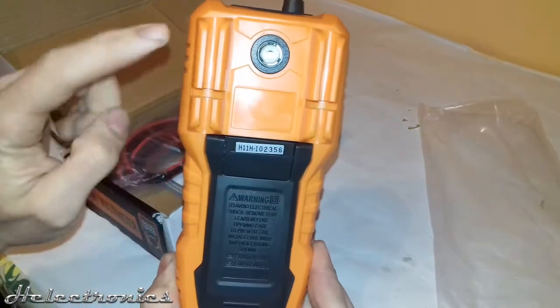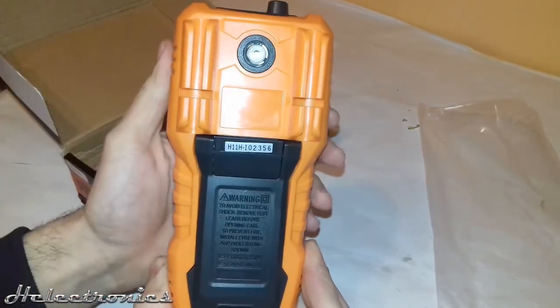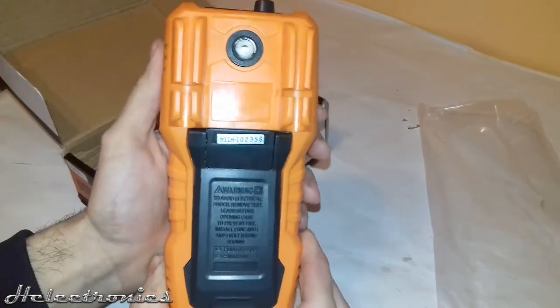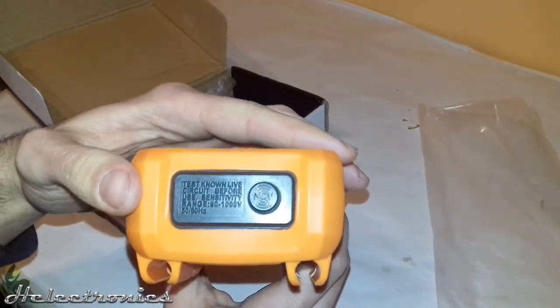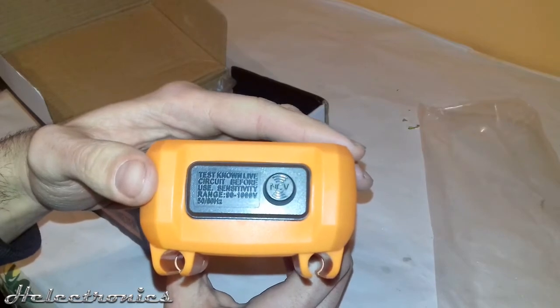These are the holders of the probes and here is also the flashlight. On the top the NCV sensor can be found. Later I will demonstrate what that is used for.